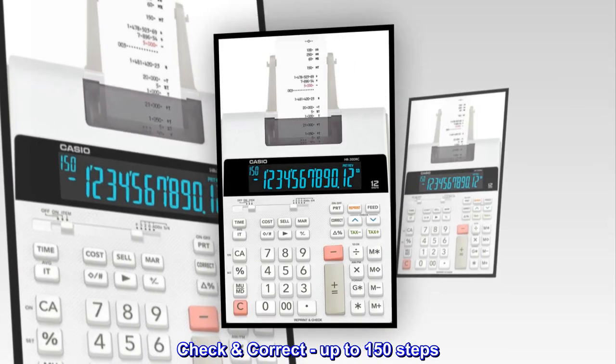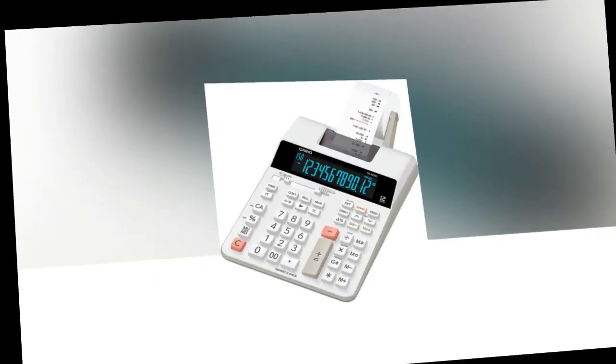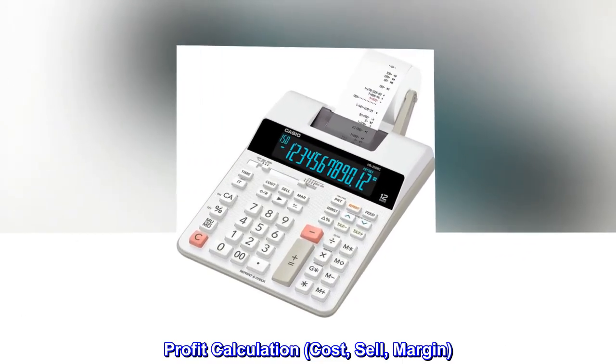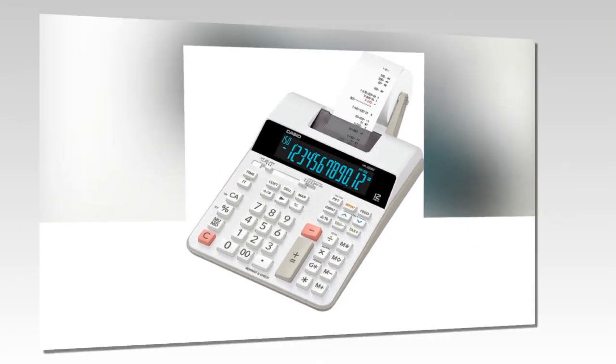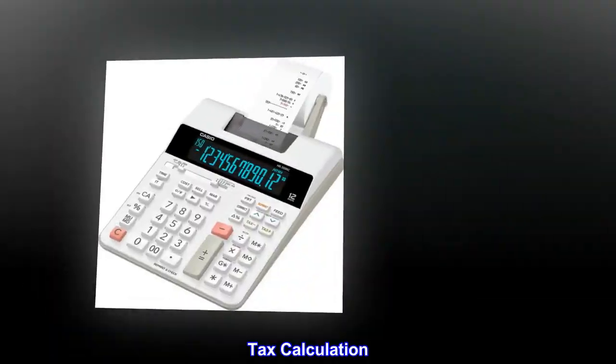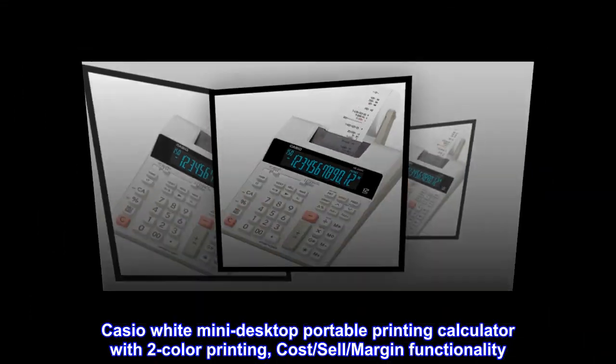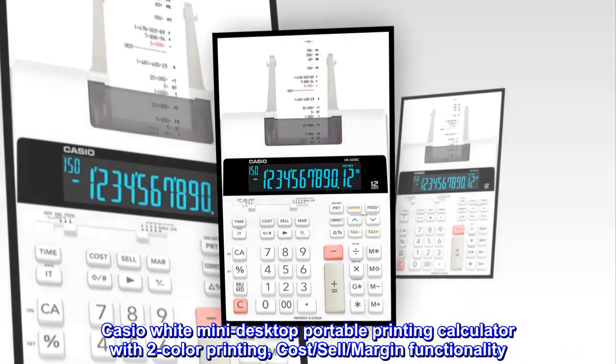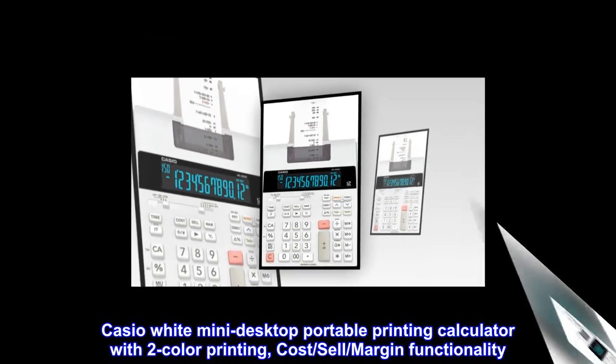Reprint function, check and correct up to 150 steps, profit calculation, cost, sell, margin. Time, date display and stamp, tax calculation. Casio white mini desktop portable printing calculator with two-color printing, cost, sell, margin functionality.